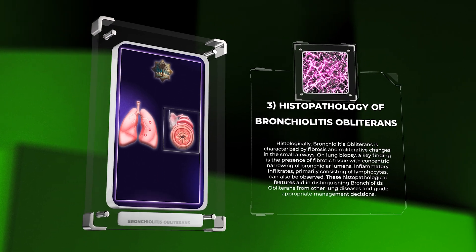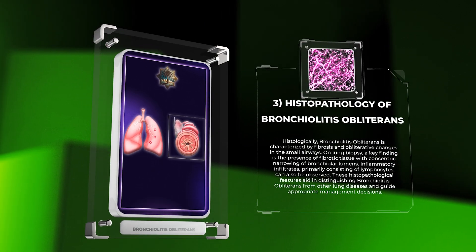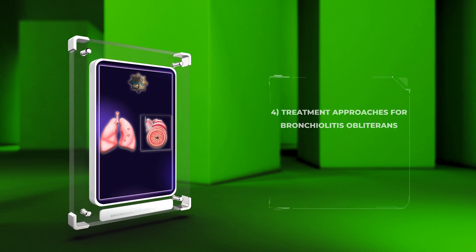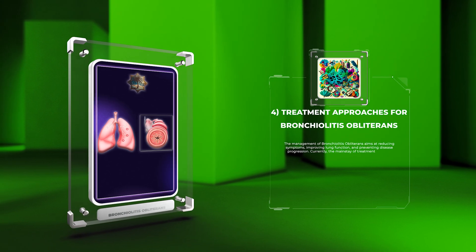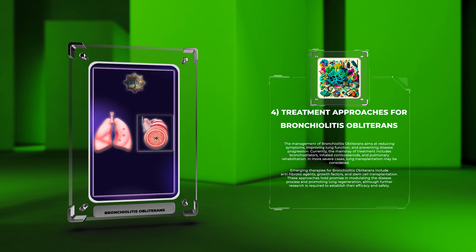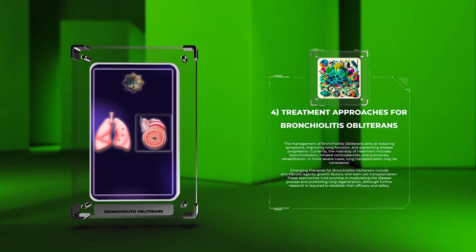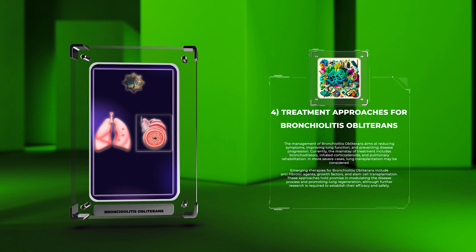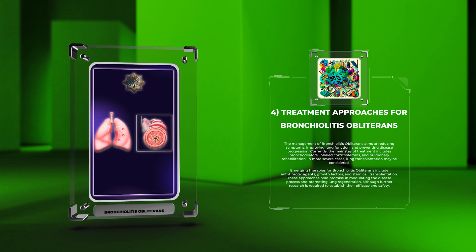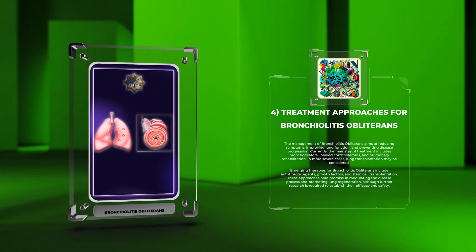These histopathological features aid in distinguishing bronchiolitis obliterans from other lung diseases and guide appropriate management decisions. The management of bronchiolitis obliterans aims at reducing symptoms, improving lung function, and preventing disease progression. Currently, the mainstay of treatment includes bronchodilators, inhaled corticosteroids, and pulmonary rehabilitation. In more severe cases, lung transplantation may be considered.